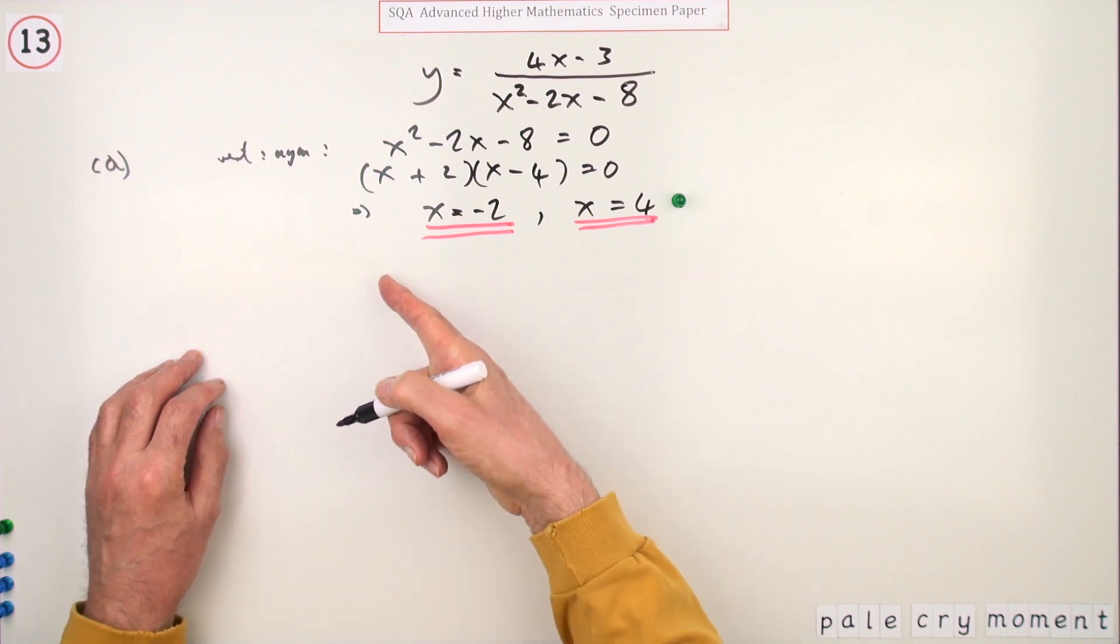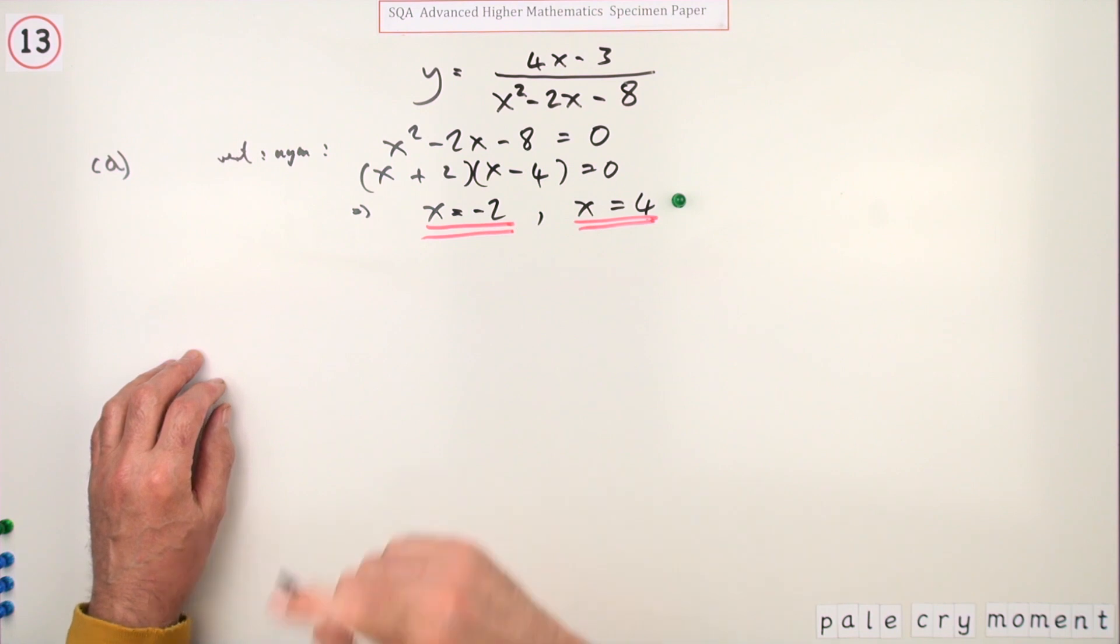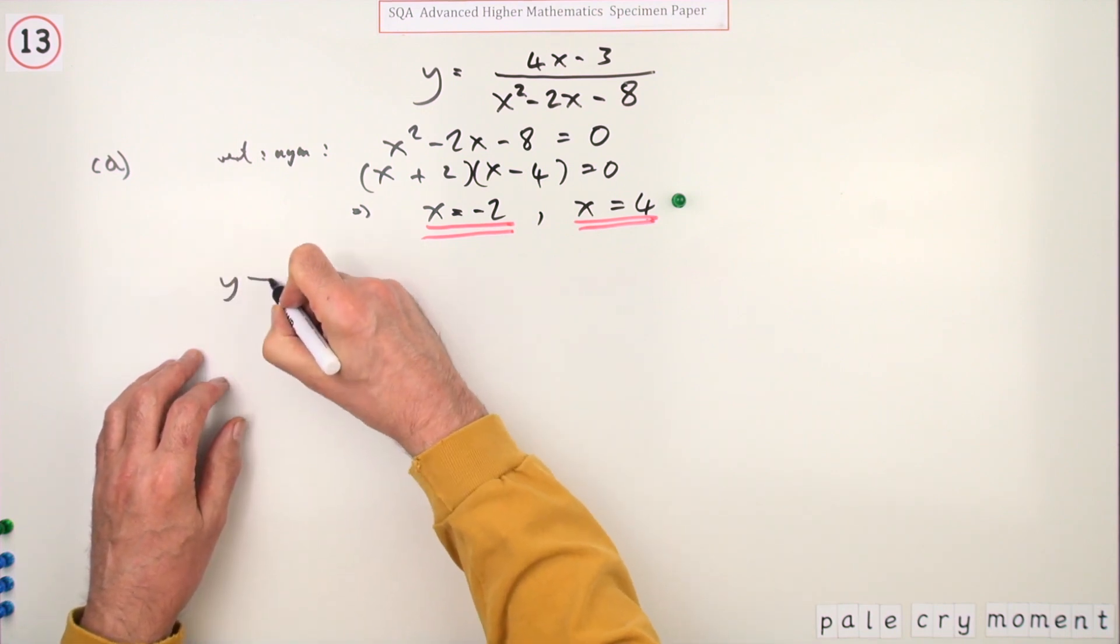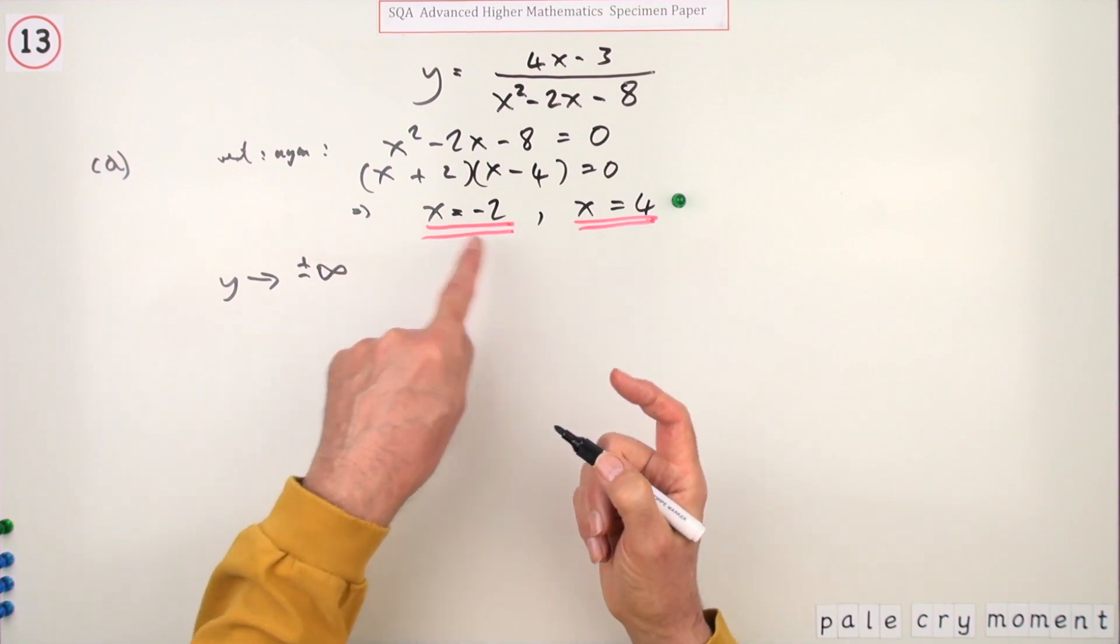Y tends to infinity, and it could be plus or minus because it could be one or the other on either side of it, as x tends to negative 2, and it also does that as x tends to 4.